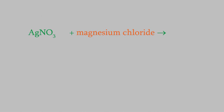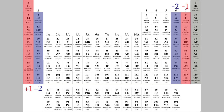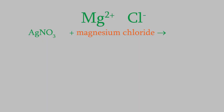For the second molecule, we have magnesium, which the periodic table tells us has a charge of plus two, and chloride, which has a charge of minus one. So to make the charges cancel, we'll need one magnesium and two chlorines. The formula is MgCl2.